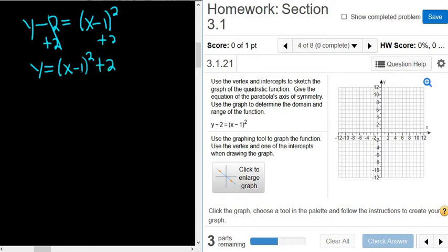And so the vertex, we'll find it by noticing that the standard form is a(x minus h) squared plus k. And really the trick is you just switch it, keep it. So here there's a negative 1, so it becomes a positive 1. And here it's a positive 2, so you keep it.